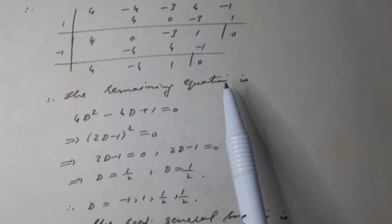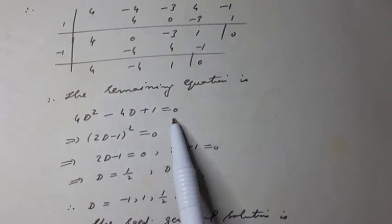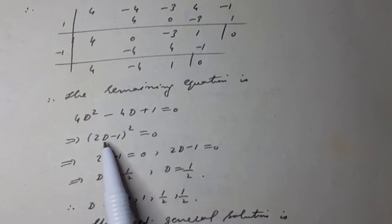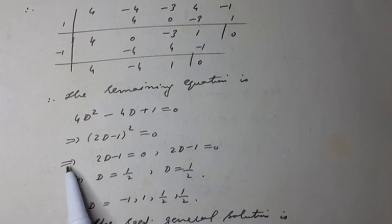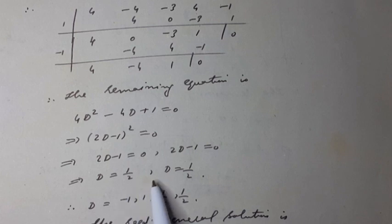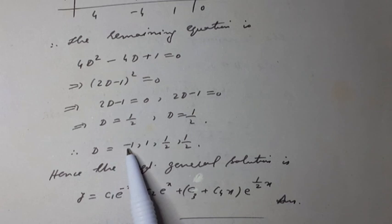the depressed or remaining equation is 4d² - 4d + 1 = 0, and it can be written as (2d - 1)² = 0. This implies 2d - 1 = 0. Therefore d = 1/2, d = 1/2.